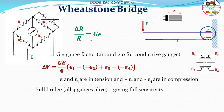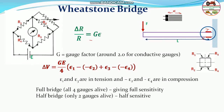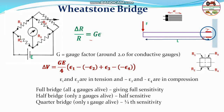This is called a full bridge if all four gauges are active, connected on surfaces subjected to tension and compression, giving full sensitivity. It is called a half bridge if only two gauges are active, giving half sensitivity. If only one gauge is active, it is called a quarter bridge with one-fourth sensitivity. So the potential reading in the Wheatstone bridge is less if only one gauge is active. This is how we can calculate the force of any member subjected to compression or tension using strain gauges.